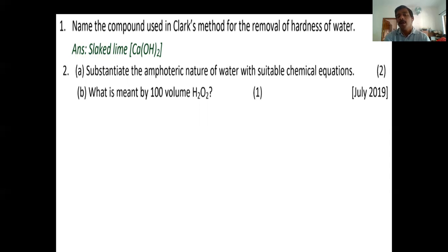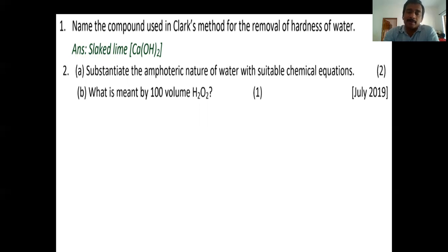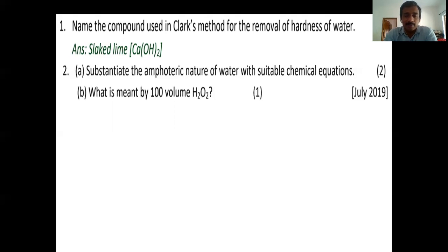Second question: Substantiate the amphoteric nature of water with suitable chemical equations. Amphoteric means showing both acidic and basic character. We can write: H2O + H2O → H3O⁺ + OH⁻, where one H2O acts as acid and the other as base. Similarly, NH3 + H2O → NH4⁺ + OH⁻ where H2O is an acid, and HCl + H2O → H3O⁺ + Cl⁻ where HCl is an acid and H2O is a base.